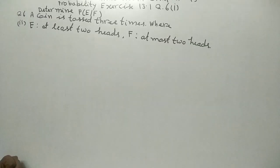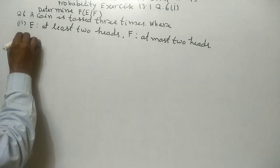Determine probability of E and F, given that F has occurred. Means probability E upon F. Question 6: A coin is tossed three times, where E is at least two heads, F is at most two heads. So now, solution.